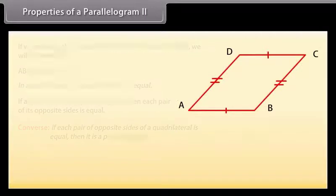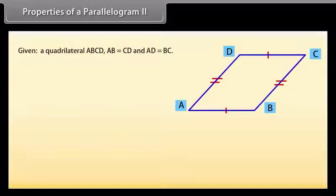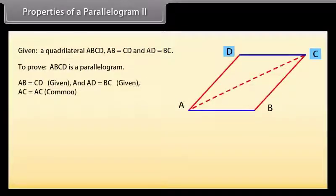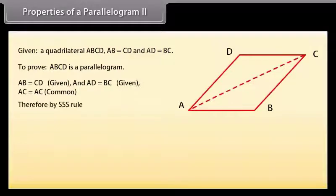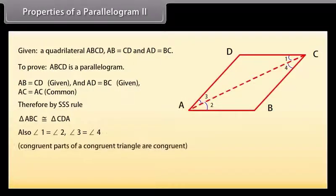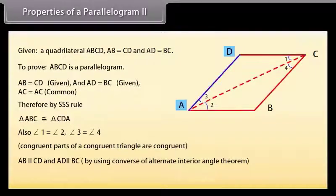Let us prove this theorem. Given quadrilateral ABCD such that AB = CD and AD = BC. To prove ABCD is a parallelogram, draw diagonal AC. Since AB = CD (given), AC = AC (common), and AD = BC (given), by SSS rule triangle ABC is congruent to triangle CDA. So angle 1 = angle 2 and angle 3 = angle 4 by CPCT. Therefore AB is parallel to CD and AD is parallel to BC. Hence ABCD is a parallelogram.